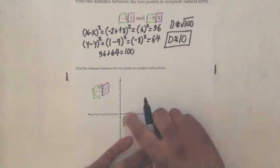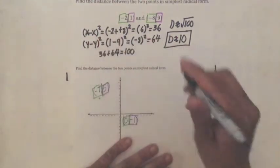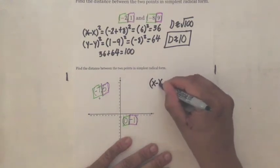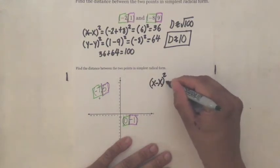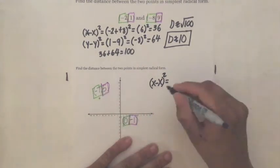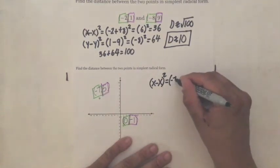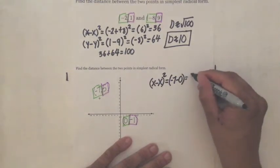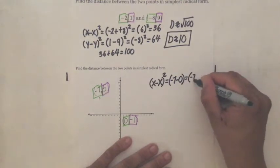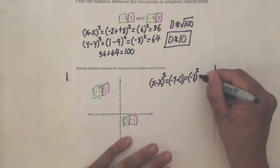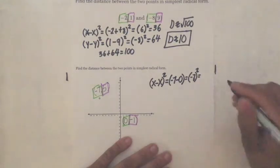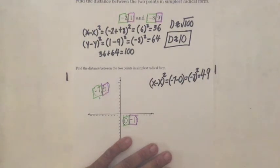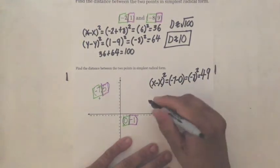So let's do our X first. X minus X squared. So that's my two greens, negative seven minus zero, and I get negative seven squared. Negative seven, negative times negative is positive. Seven times seven is 49. So I have my X.